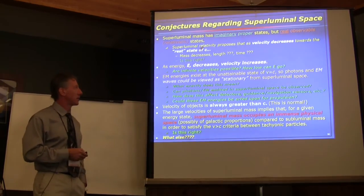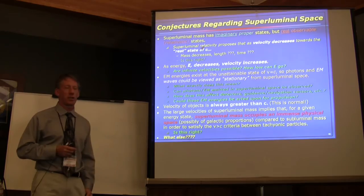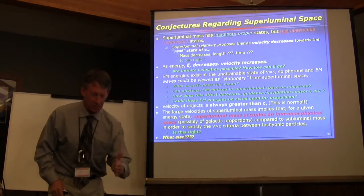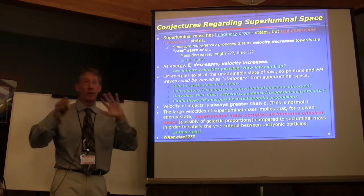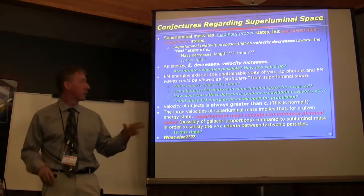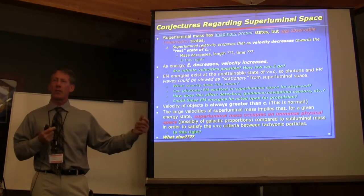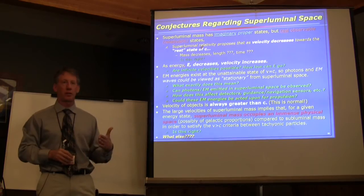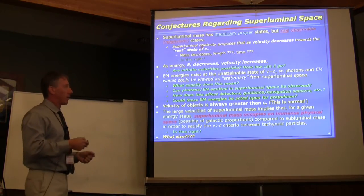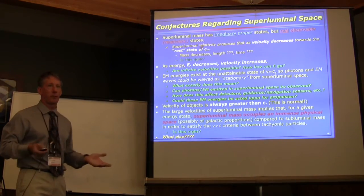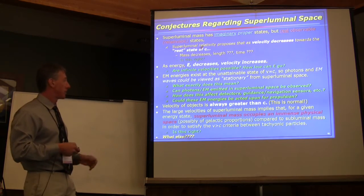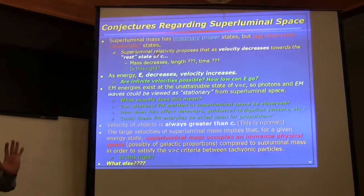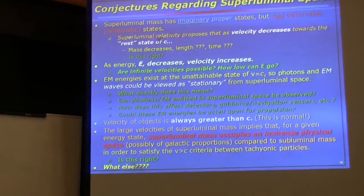Energies exist at unattainable states of v equals c. Photons can be viewed as stationary from superluminal space — that's weird — because if the rest state of superluminal space is the speed of light, then everything we observe as moving, like photons and electromagnetic waves, appears stationary from the superluminal side. One of the reasons why we can't use electromagnetics for propulsion is because we're trying to push off of something that's already moving fast. But what if you could push off of it if it's considered a rest state? Can photons be emitted in superluminal space and be observed? How does this affect detectors and guidance systems? Could EM energies be acted on for propulsion?